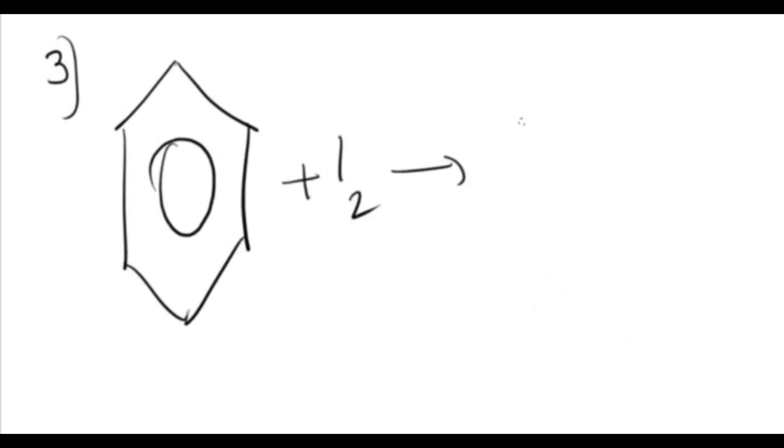The third question was you had to show the iodination of benzene. So it acts as an alkane, there is substitution because the bonds are very strong, so you're going to get iodobenzene and hydrogen iodide.